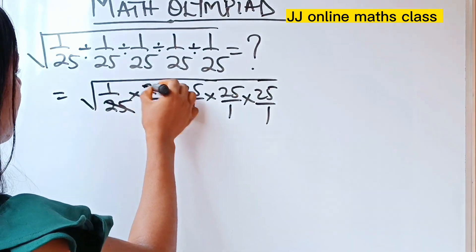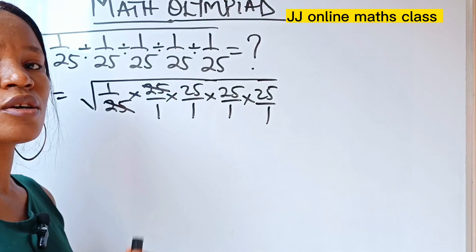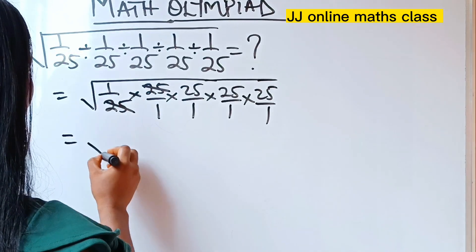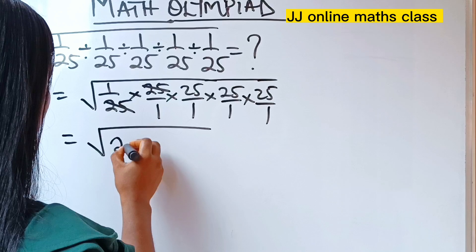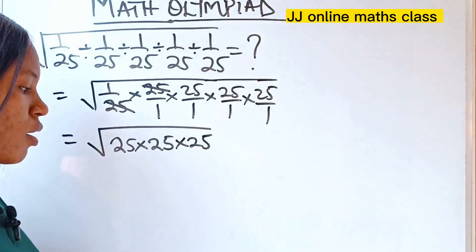So we go ahead and divide this by this, and we are going to have 25 times 25 times 25. So this is equal to square root of 25 times 25 times 25, okay?